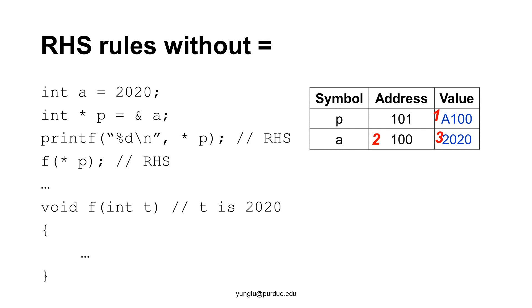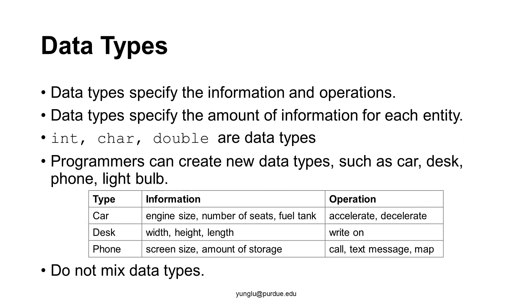We need to understand the meaning of data types. What are data types? They specify what information is available and what operations are allowed. In C language, some data types are already available, such as integer, character, and double. Programmers can create new data types, such as car, desk, phone, and light bulb.